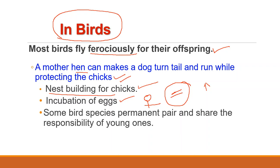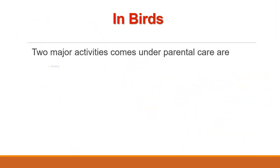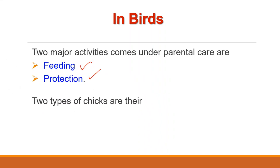Some birds part company soon after mating is over. Others remain together to share the nest building and care of their young ones, while some birds select mates forever. Some bird species form permanent pairs and share the responsibility. Two major activities under parental care are feeding and protection. In case of birds, two types of chicks exist: altricial young and precocial young.